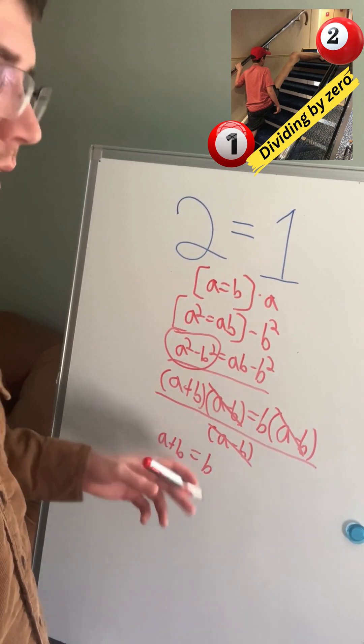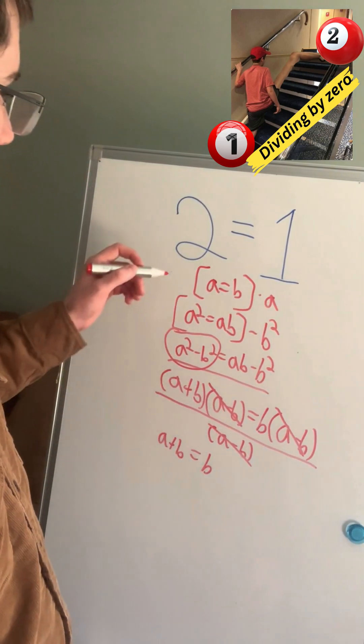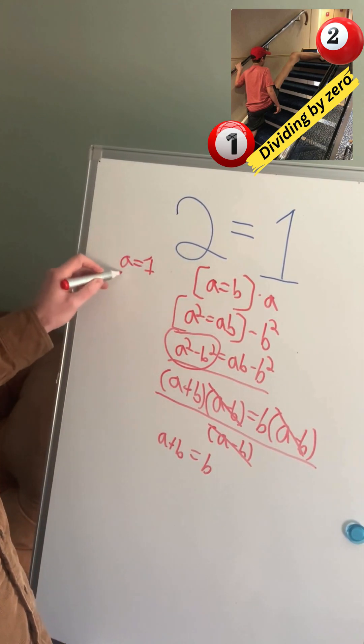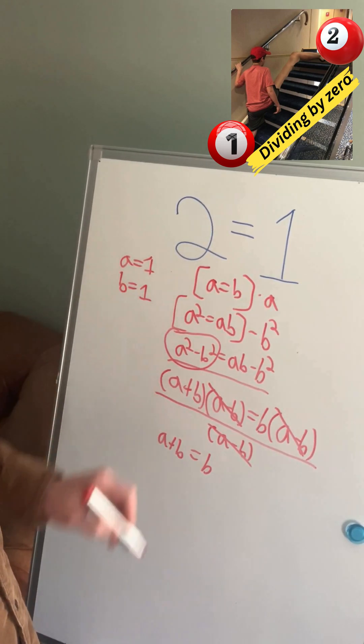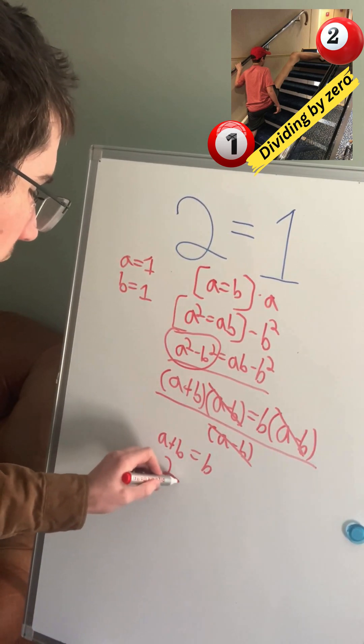So A plus B equals B. If A equals 1, then B will also equal 1. So this must mean that 2 equals 1.